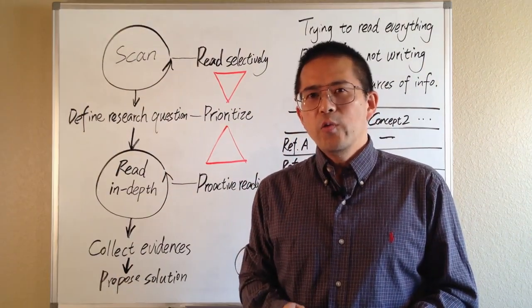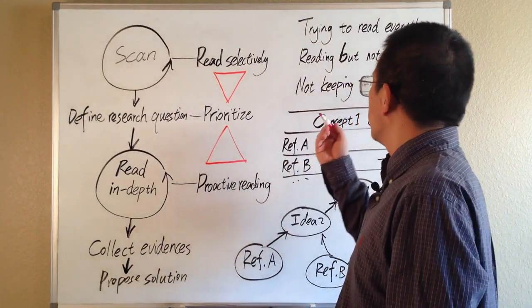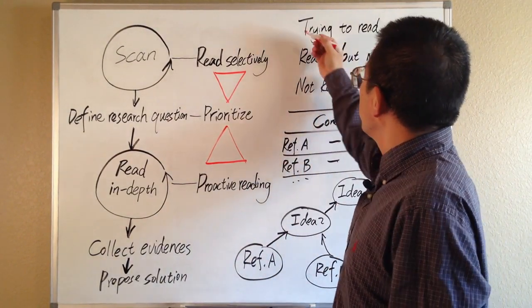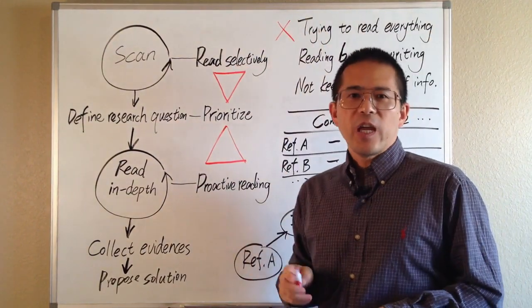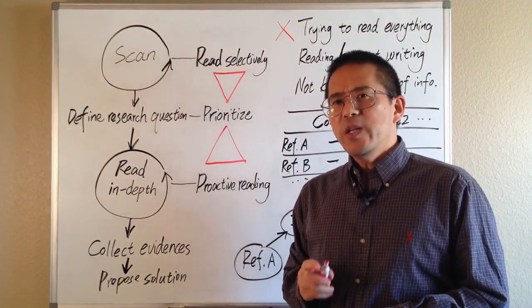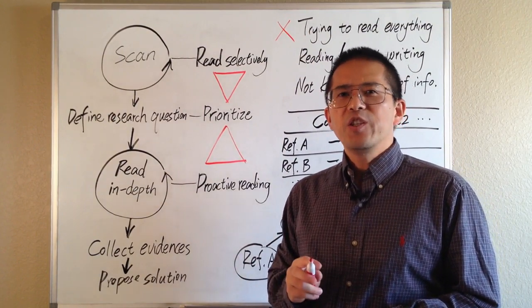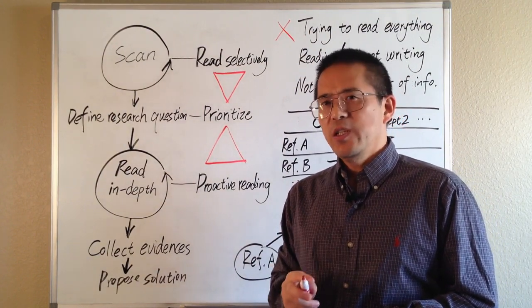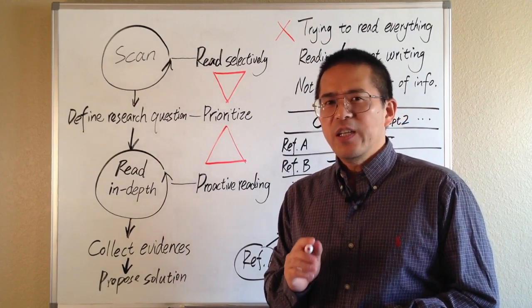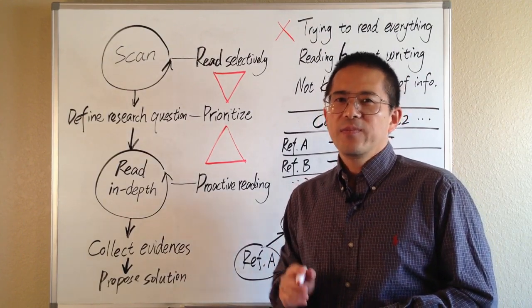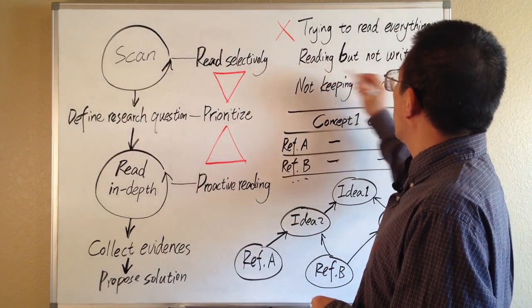During the whole review process, there are three traps to avoid. The first trap is trying to read everything, especially in the first cycle. Nowadays, so much information is easily available. It is mission impossible and unnecessary to read it all. The ability to focus selectively is the key for efficient study.